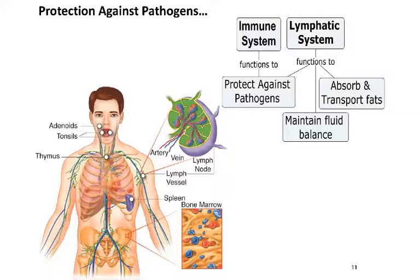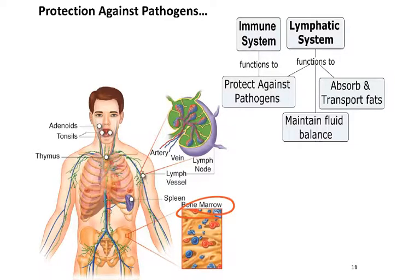There are two systems that help to protect us against pathogens. The first is the immune system, which is widely distributed throughout the body. For example, bone marrow is considered part of the immune system, though it's obviously also part of the skeletal system. So there are a number of structures or organs in our body that are considered to be part of more than one system.